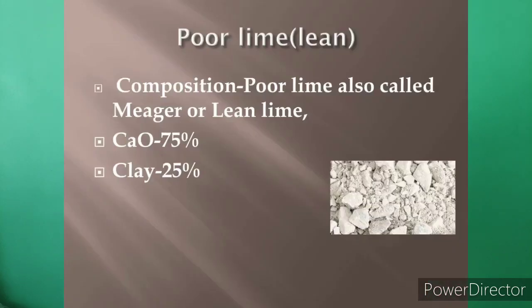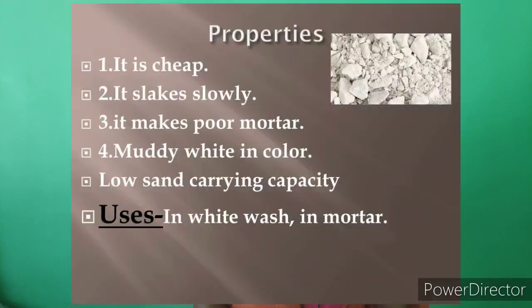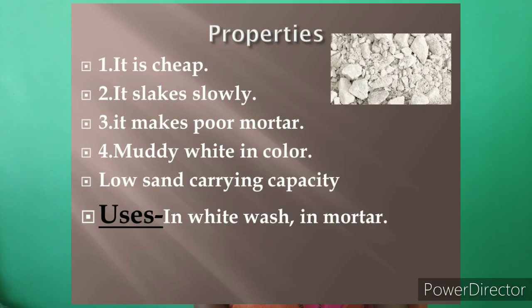Poor lime, also known as lean lime, contains calcium oxide 75% and clay 25%. Properties: it is cheap, slakes slowly, makes poor mortar, is muddy white in color, and has low sand-carrying capacity. It is used in white wash and mortar.